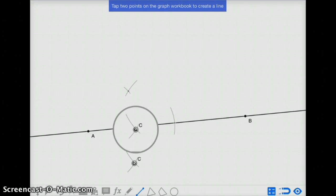If I want to create a line segment, I go from this intersection up to this one, and I now have a perpendicular line segment to AB that passes through point P.